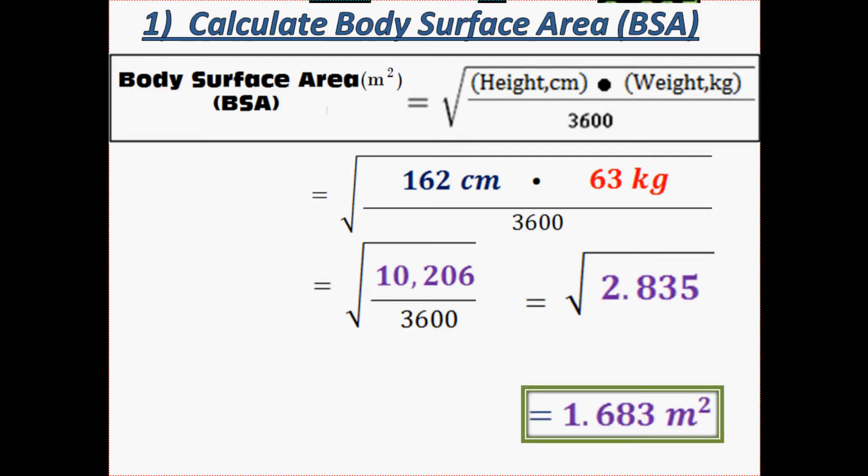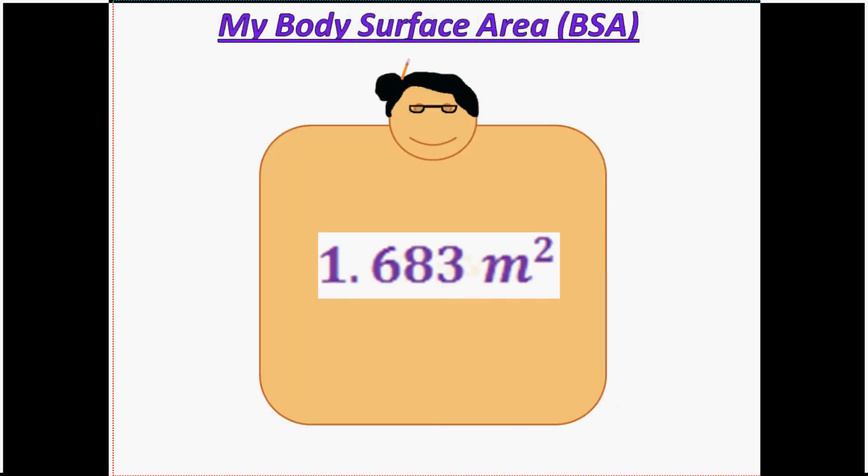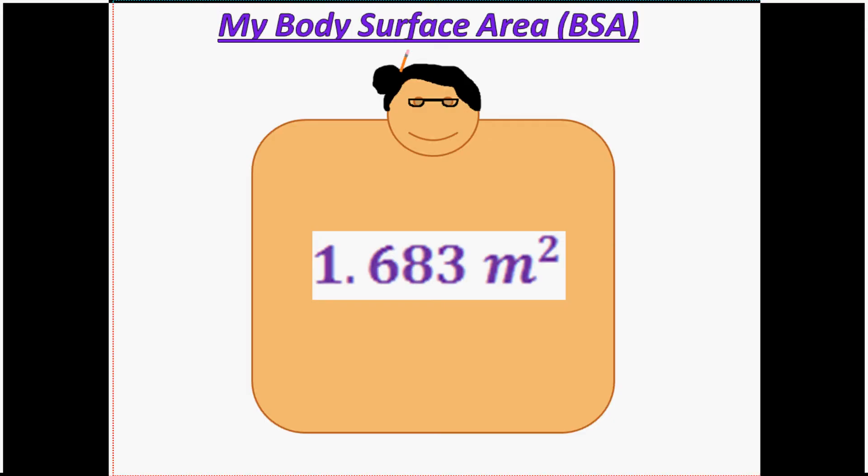Meaning, if I were to rip off my skin and paste it into a little box, it would measure 1.683 meters on both sides. So that's my body surface area. Now, why do I need my body surface area? Because that means I can calculate my expected vital capacity.